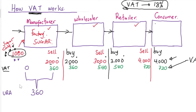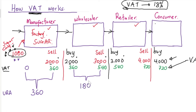For the wholesaler: they received 540 VAT when selling, however when purchasing they paid out 360 VAT. So VAT collected minus VAT paid out: 540 minus 360 equals 180. So the wholesaler pays 180 to government for that product.